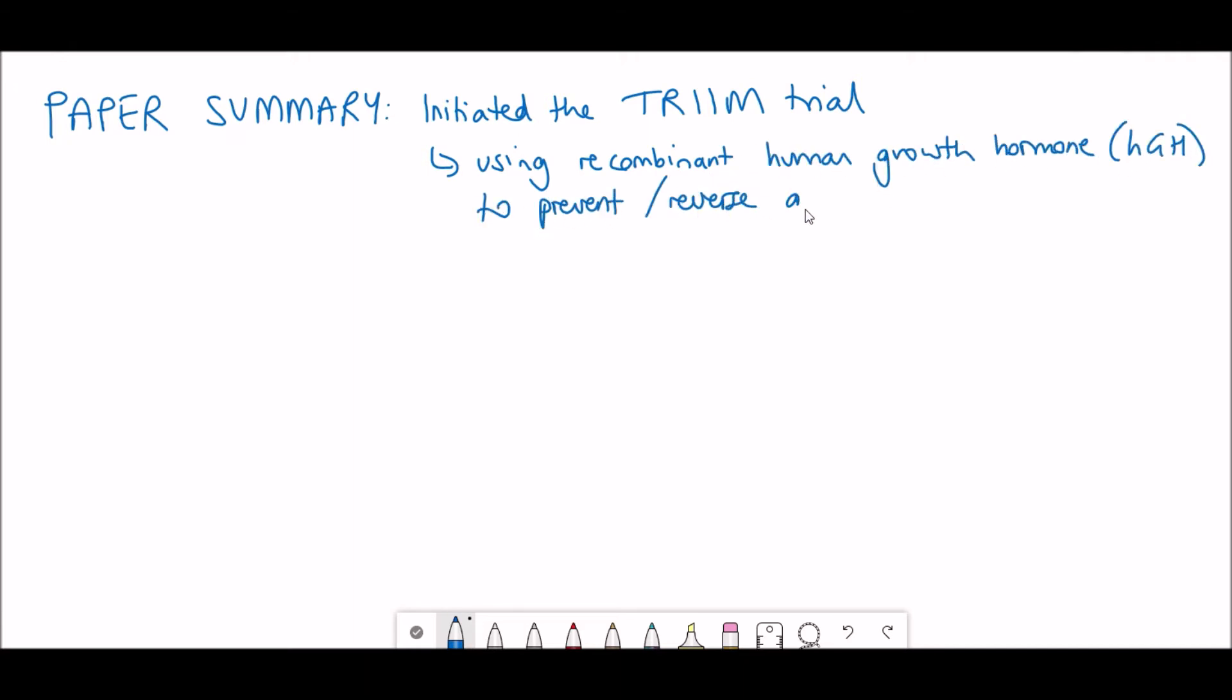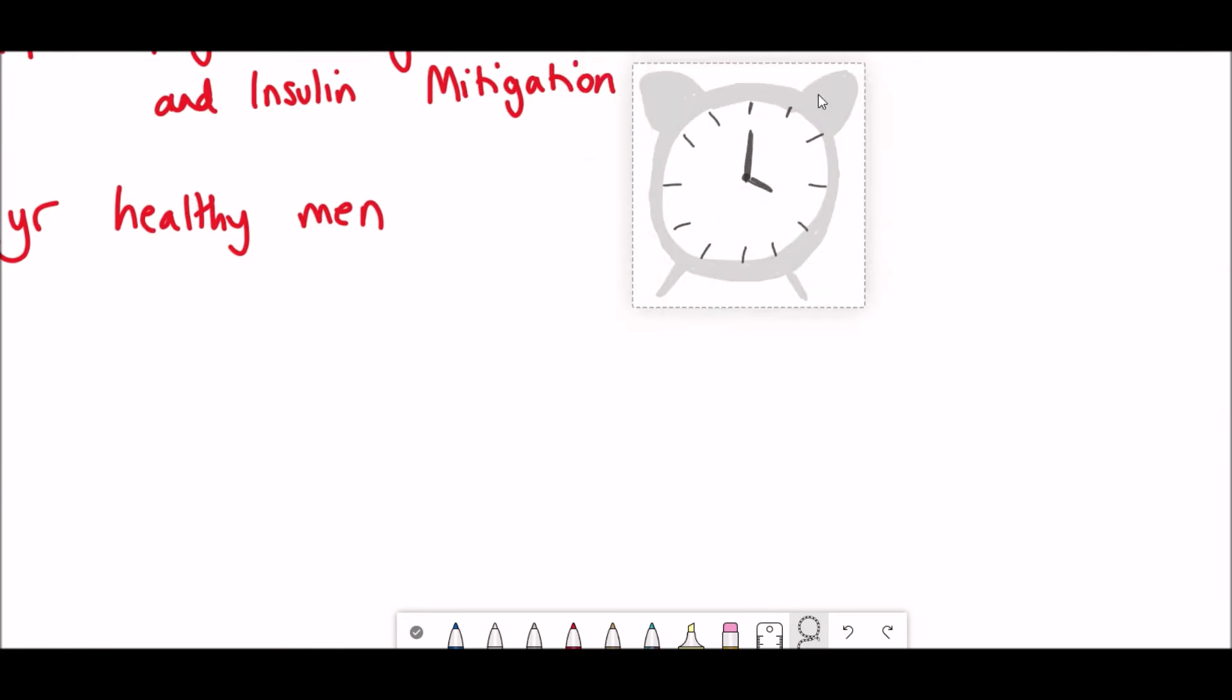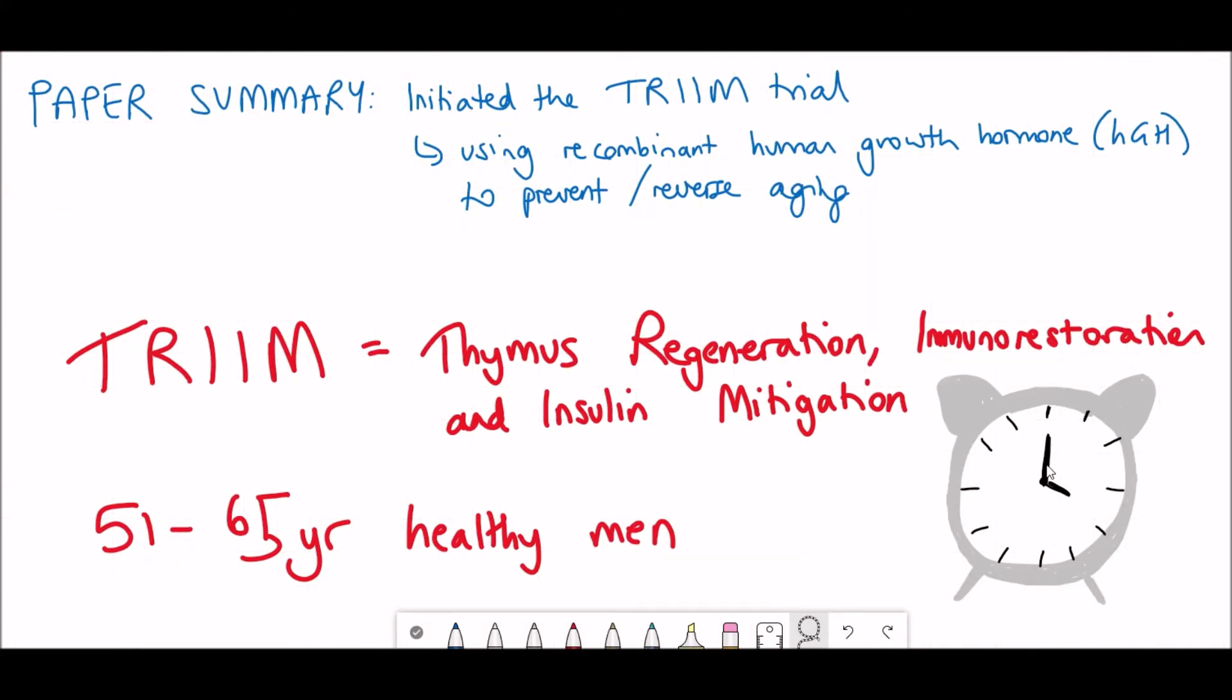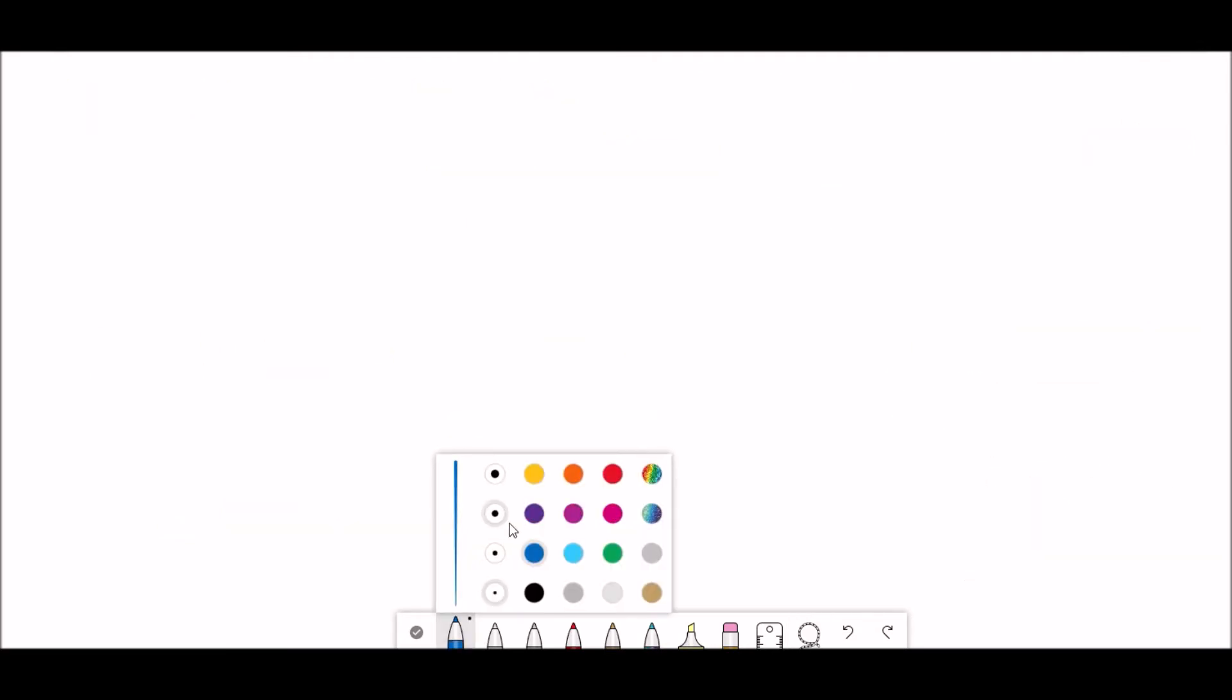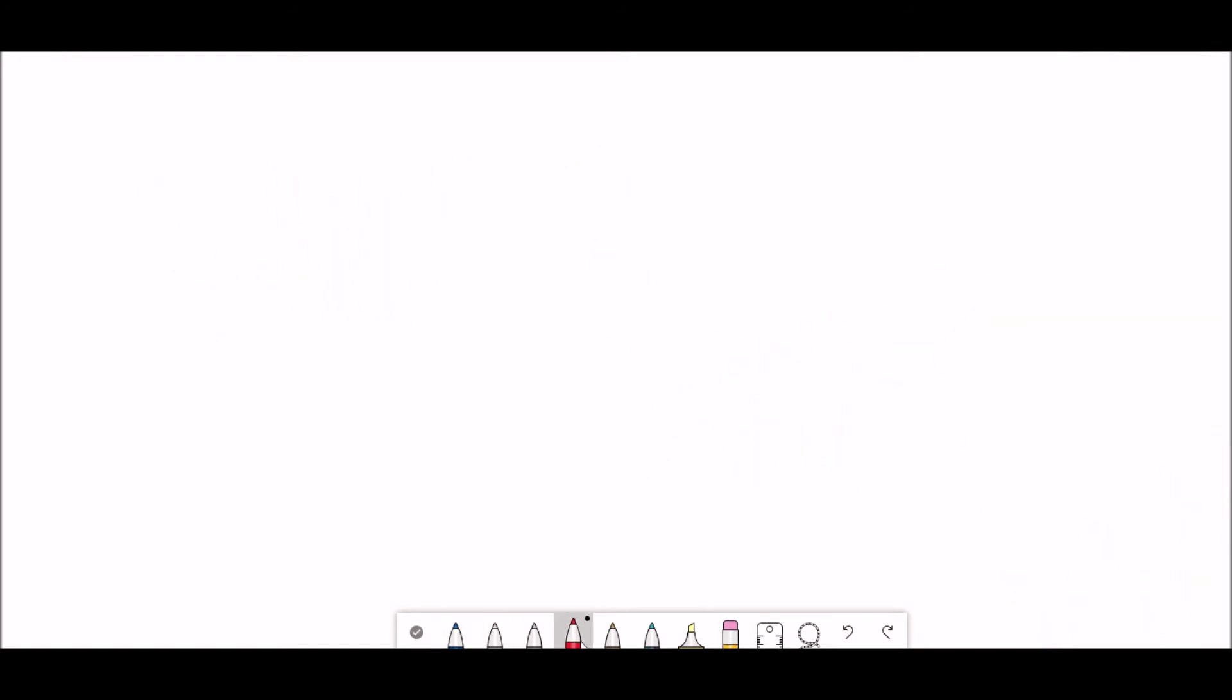So what did they actually do? This paper set up this TRIIM trial, which stands for the Thymus Regeneration Immunorestoration and Insulin Mitigation. They did this in a select group of healthy men aged between 51 to 65 years, and they then used recombinant human growth hormone to try to prevent or even, as they say, reverse the aging by regenerating and restoring the thymus.